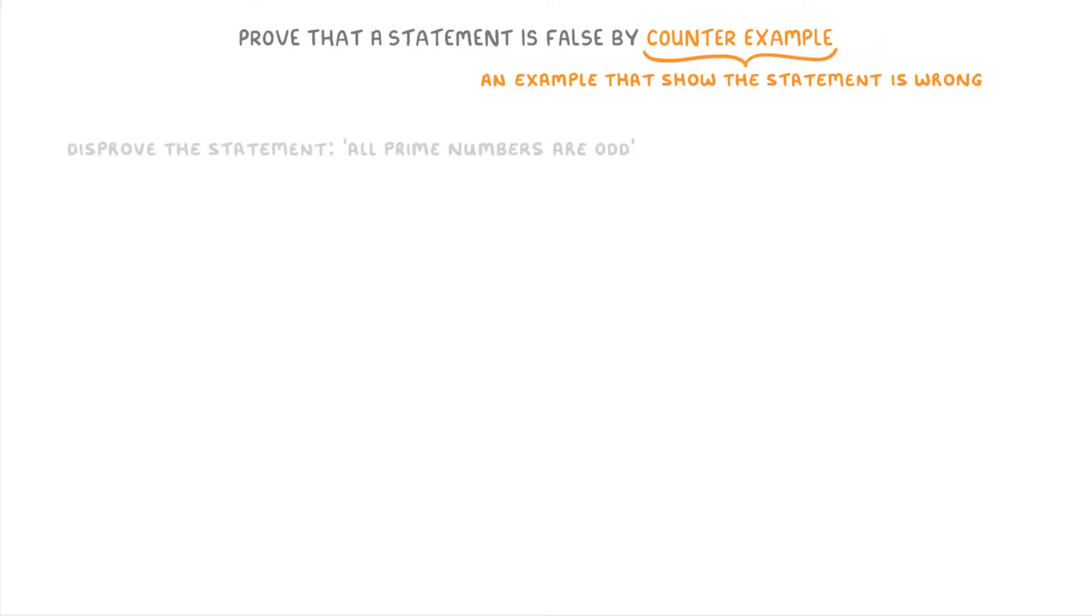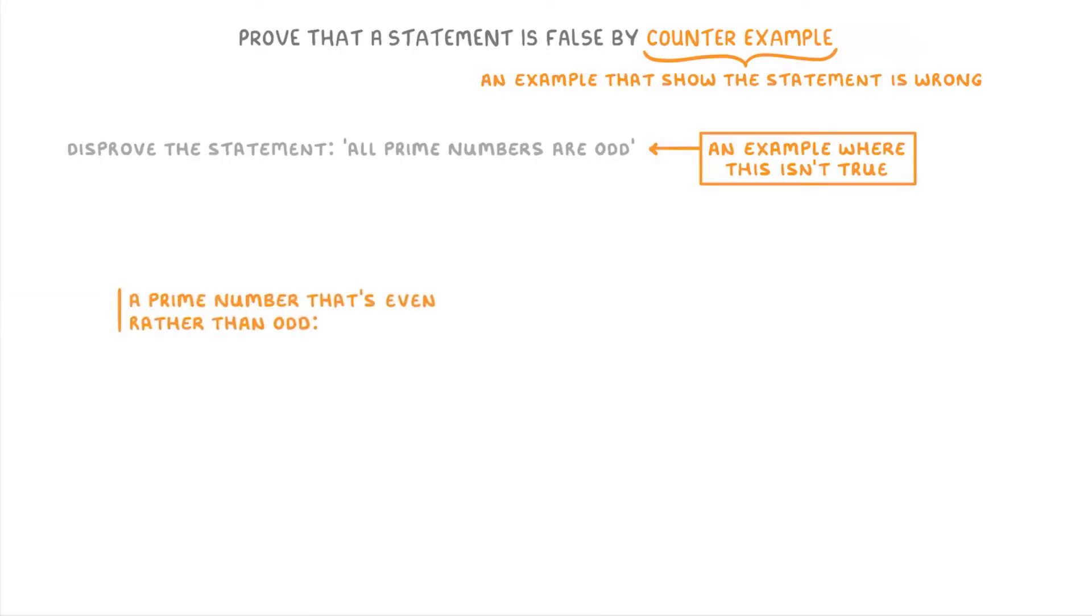Let's start with an easy one. Disprove the statement that all prime numbers are odd. So for this question, all we have to do is think of an example where this statement isn't true. So basically, think of a prime number that's even rather than odd. And there's actually only one possible example, which is the number 2, because all of the other prime numbers are actually odd.